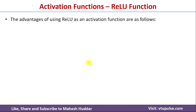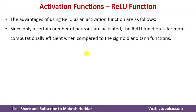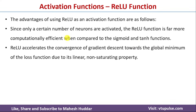Now we will discuss the advantages of ReLU. Since only a few neurons are activated at a given point of time, ReLU is far more computationally efficient compared to Sigmoid or Tanh activation functions, where all neurons are active at all times and therefore take more time. Additionally, ReLU accelerates the convergence of gradient descent towards the global minimum of the loss function due to its linear non-saturating property.